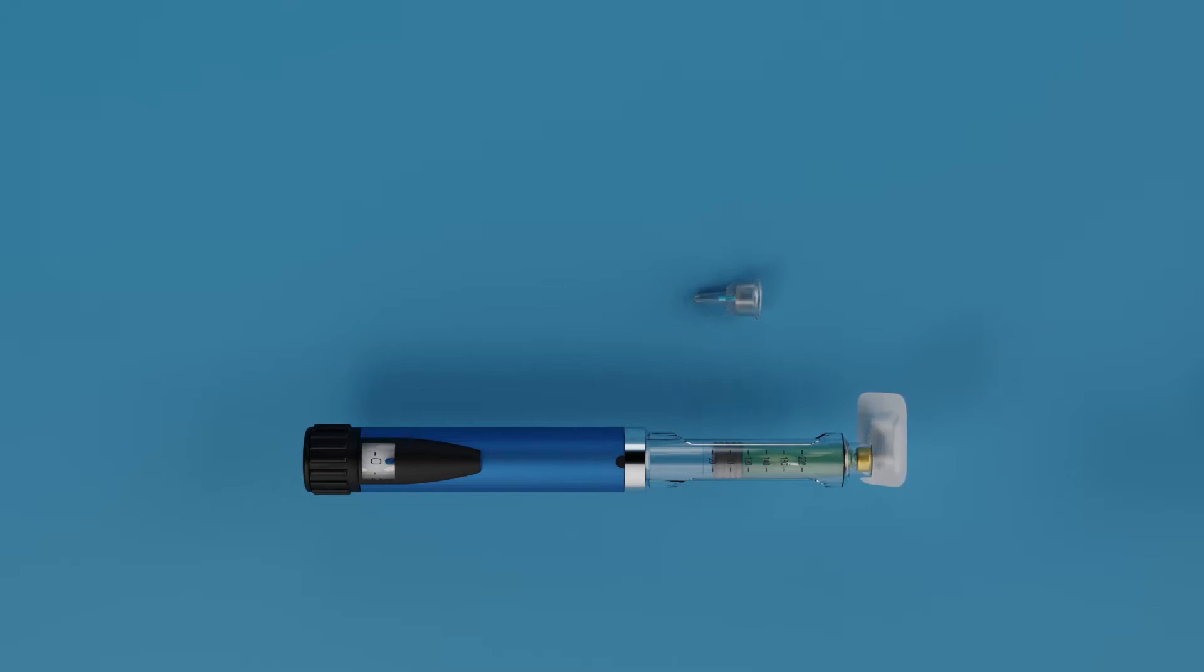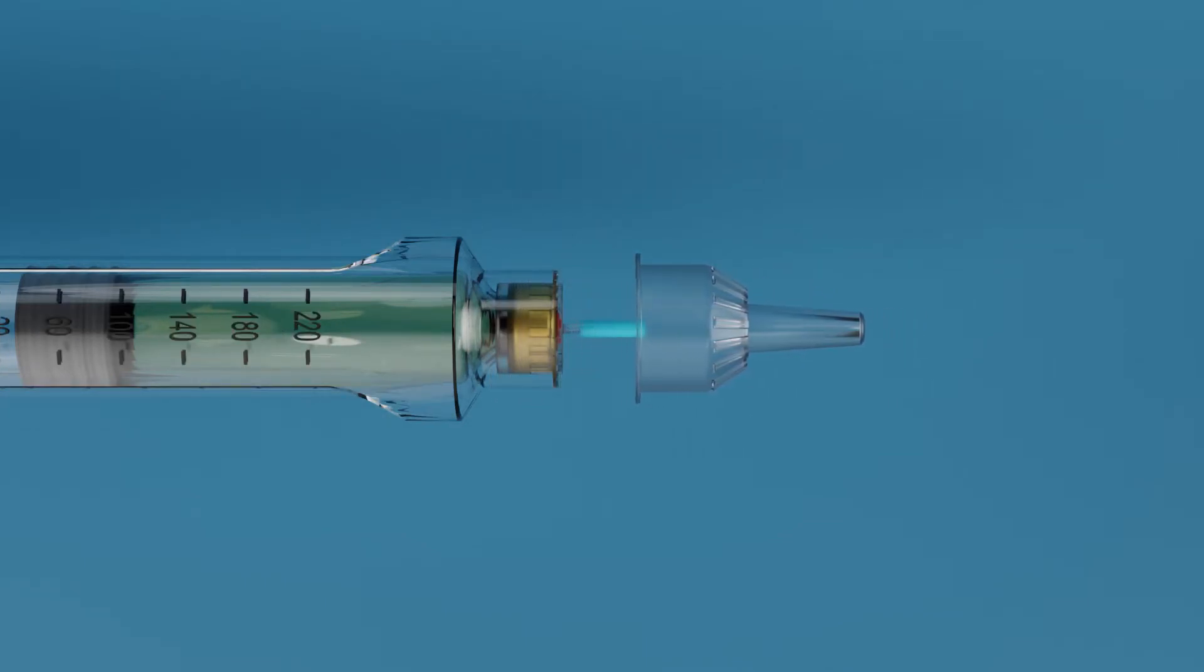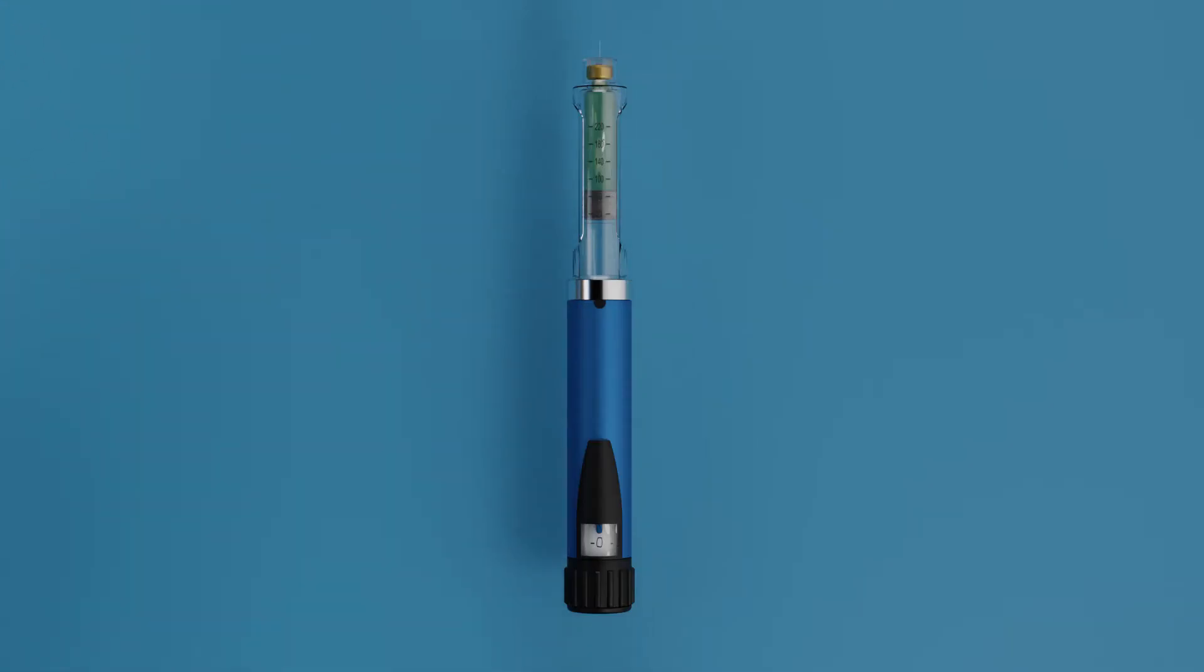Take the needle, remove the safety cap, and attach it firmly on top of the pen by screwing it until it is firmly locked into place. Remove the outer protective cap and the needle cap from the needle. Never touch the needle.